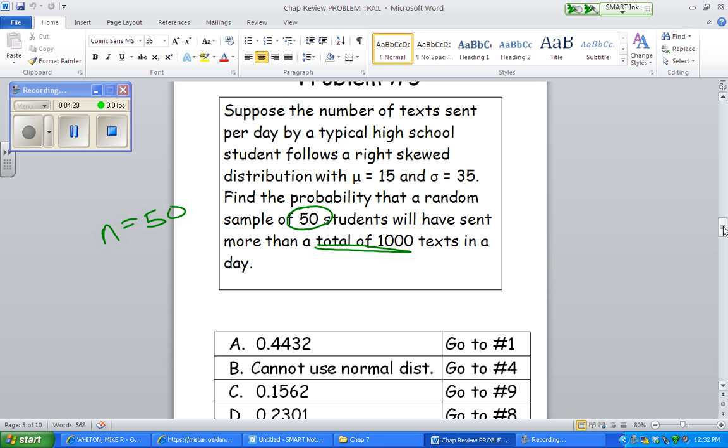Since the sample size is above 30, we know that we can use normal, okay, because this one's talking about means, this has nothing to do with proportions. But the issue here is they're saying 1,000 total texts for 50 people. So, that means an average, 1,000 for 50 students would mean an average of 20.